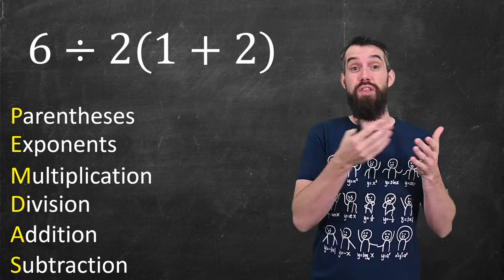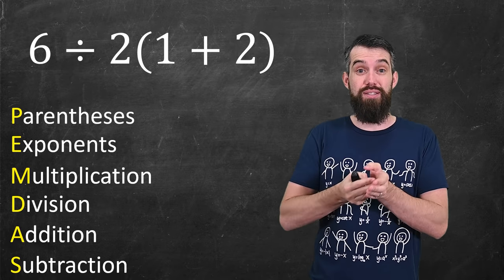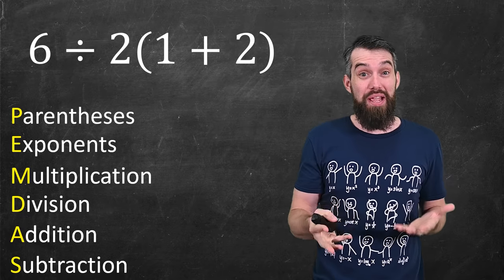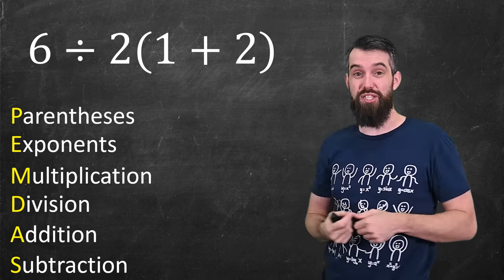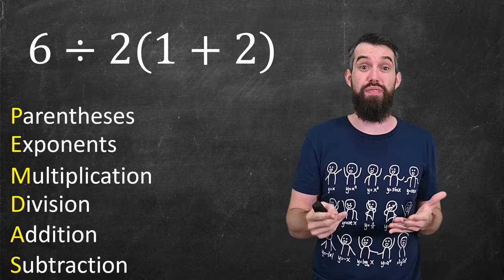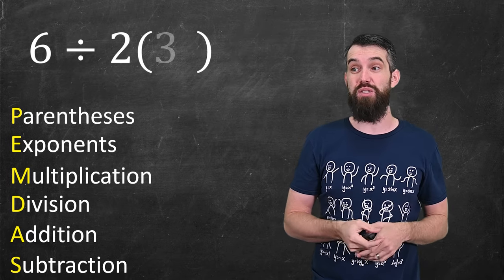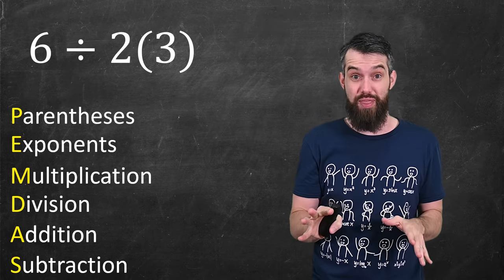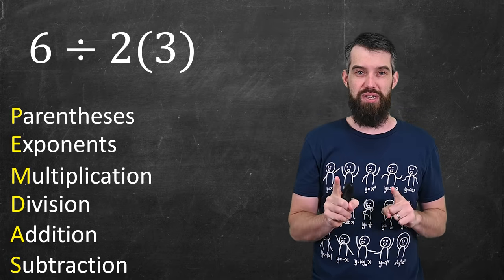And there's other versions of these - BODMAS, for example, is common in the UK and India and other countries. It doesn't matter, there's some order of operations. Basically, nobody has any disagreement about the 1 plus 2 part. You always do brackets first. So the first part is pretty straightforward: 6 divided by 2 parentheses 3. Everyone agrees with that, but this is where there's a bit of disagreement.